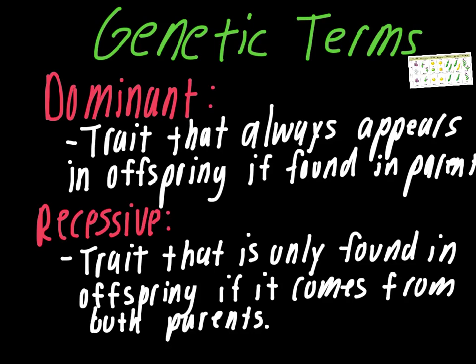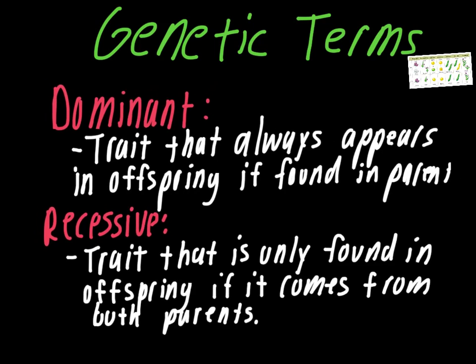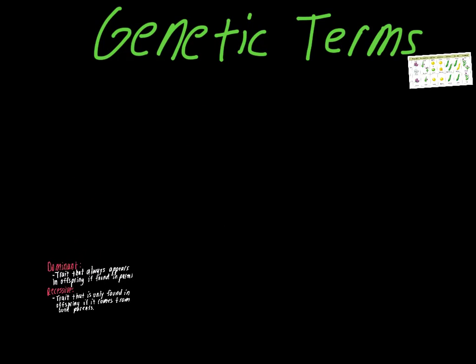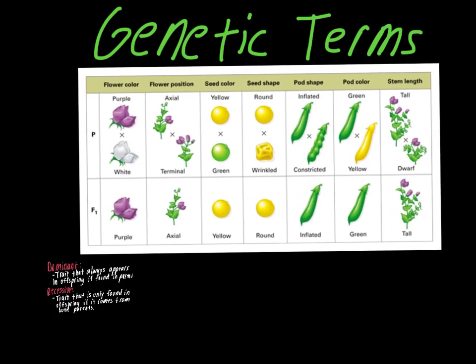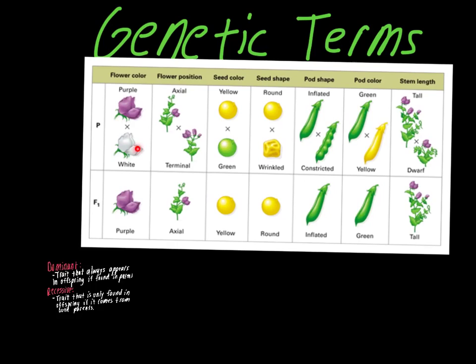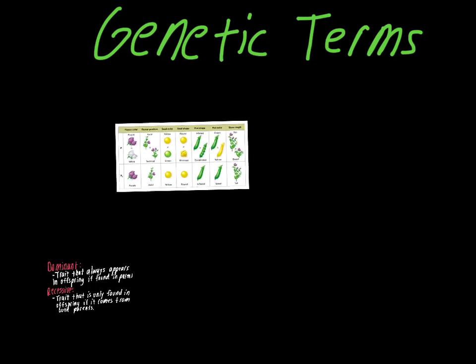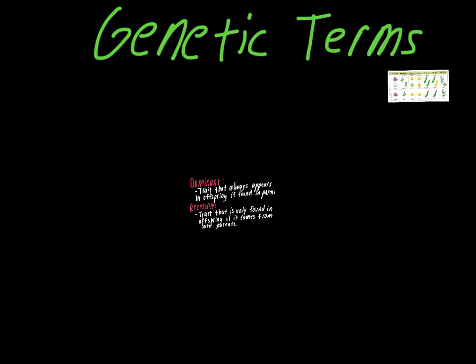So think about this, if we go back to that chart, the only way to get white flowers would be to have both parents having white flowers. If both parents were white, then all of the offspring would be white. That shows us that they're recessive. But if we mix a purple and a white, the white trait disappears, showing that purple is dominant.